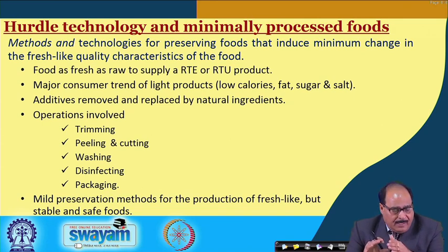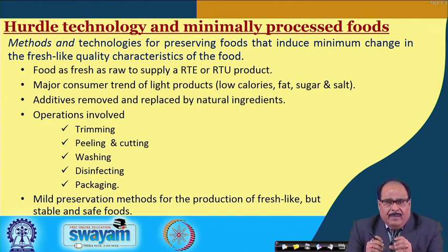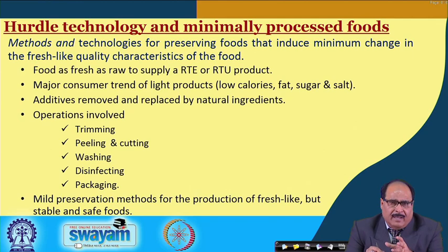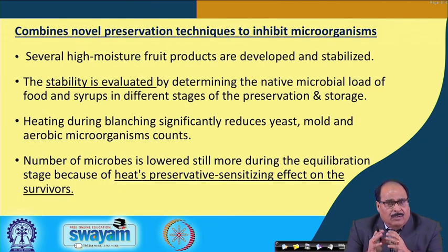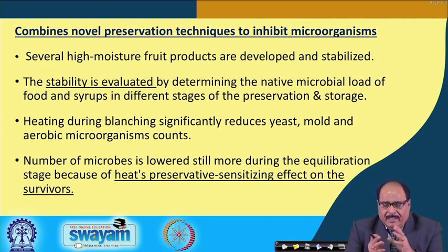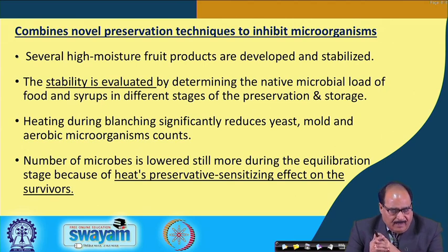The operations involved may be trimming, peeling and cutting, washing, disinfecting, packaging, or maintaining pH or water activity to the lowest possible level, so that foods are stabilized but without any visible effect on sensory attributes. This combines novel preservation technologies to inhibit microorganisms. The stability of the product is evaluated by determining the native microbial load — heating during blanching significantly reduces yeasts, etc., and the number of microbes is still lower during the equilibrium stage.